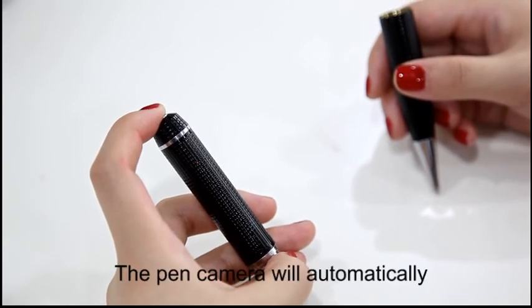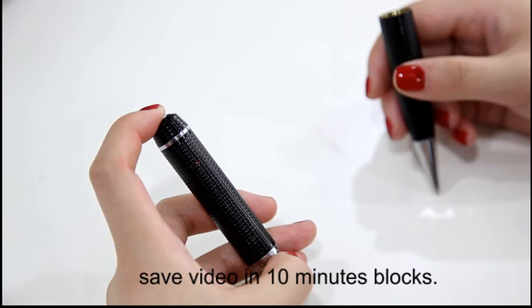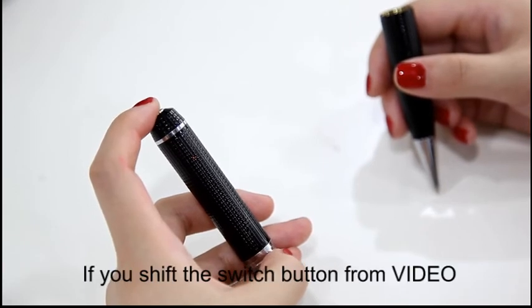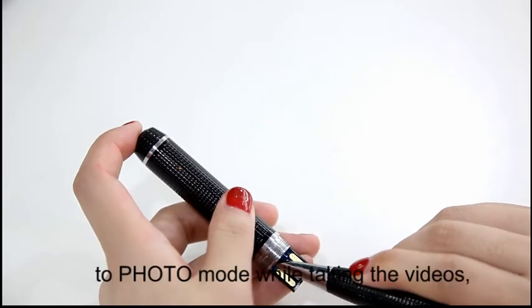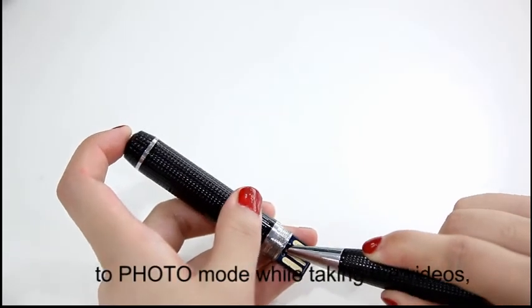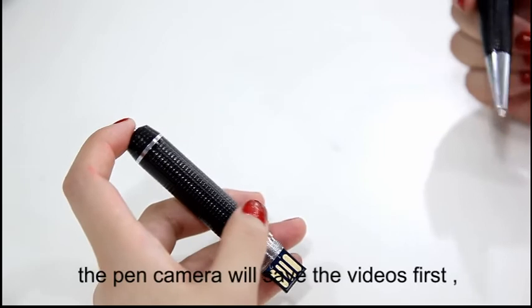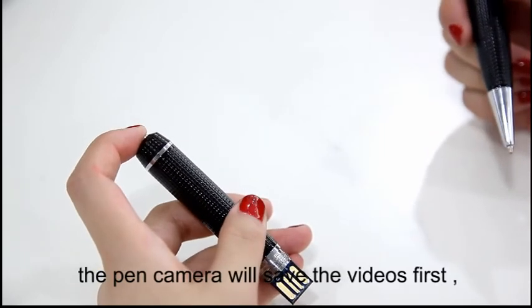The pen camera will automatically save video in 10 minutes blocks. If you shift the switch button from video to photo mode while taking videos, the pen camera will save videos first, then enter the audio mode.